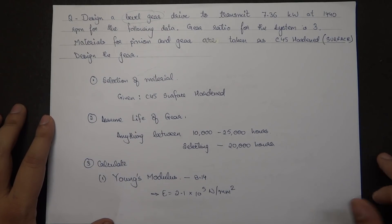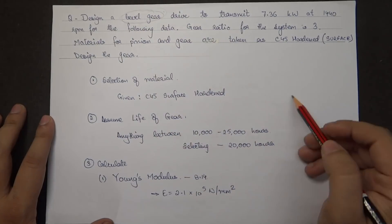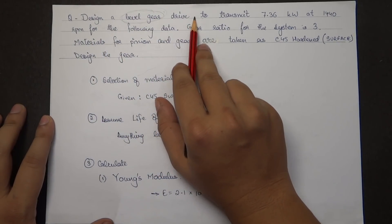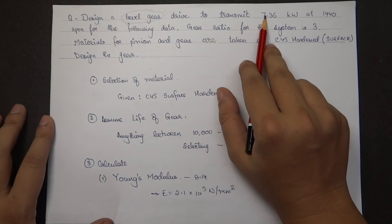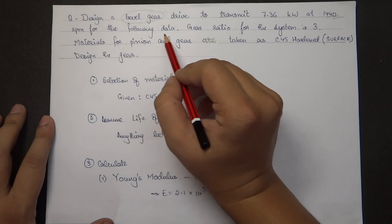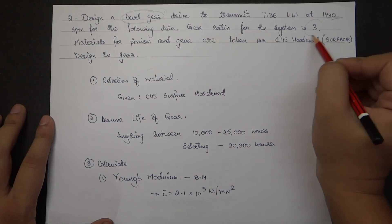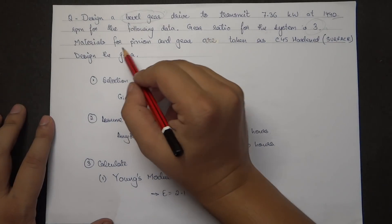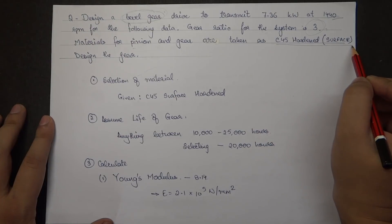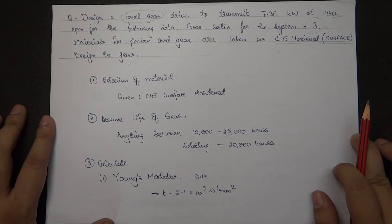In today's video we will be seeing the design procedure for a bevel gear. The question states: design a bevel gear drive to transmit 7.36 kilowatt at 1440 rpm. The gear ratio for the system is 3, and materials for pinion and gear are taken as C45 surface hardened.